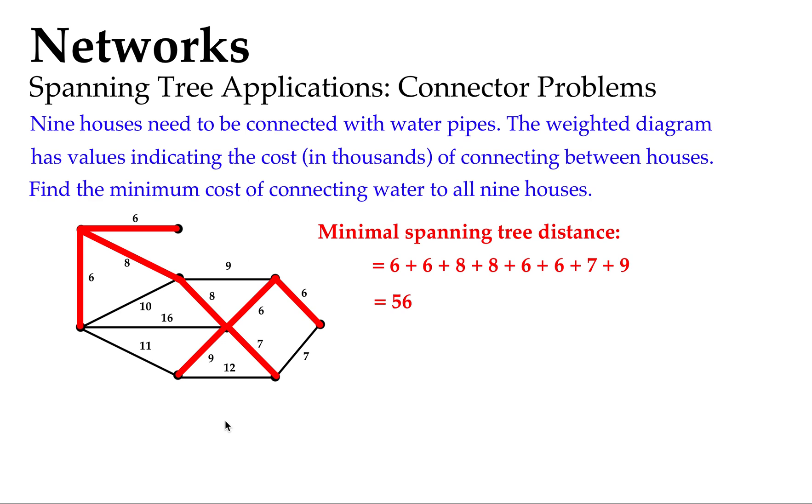So if I take my 56 there, that's representing $56,000 worth of connecting costs. Now that sounds like a lot, but it could be more if we didn't figure out the minimal spanning tree distance properly using Prim's. So I like that sort of stuff - stuff that's mathematical but ends up saving money or helping people out.